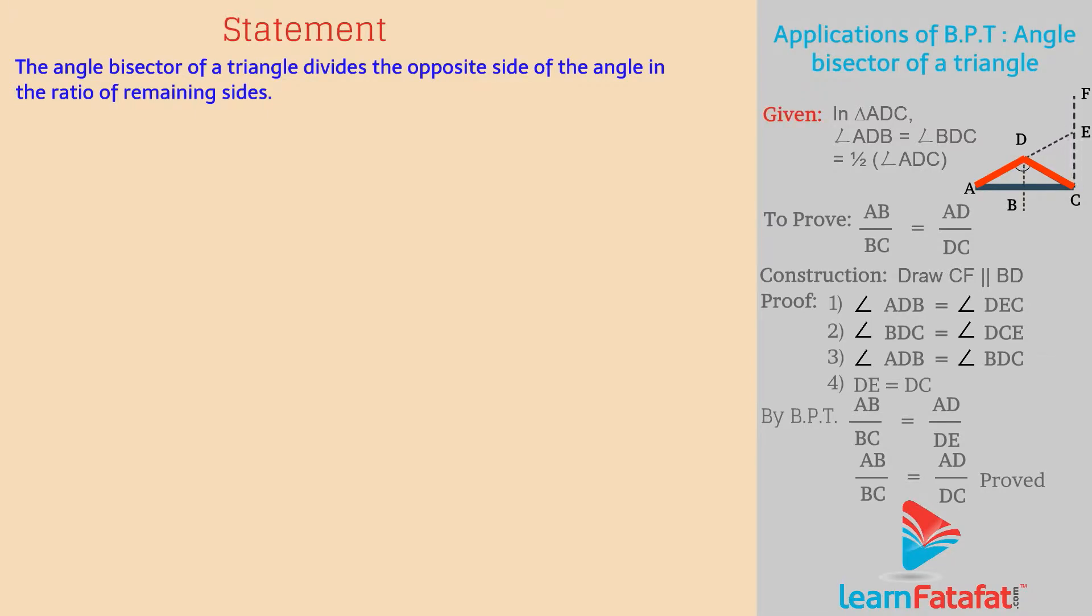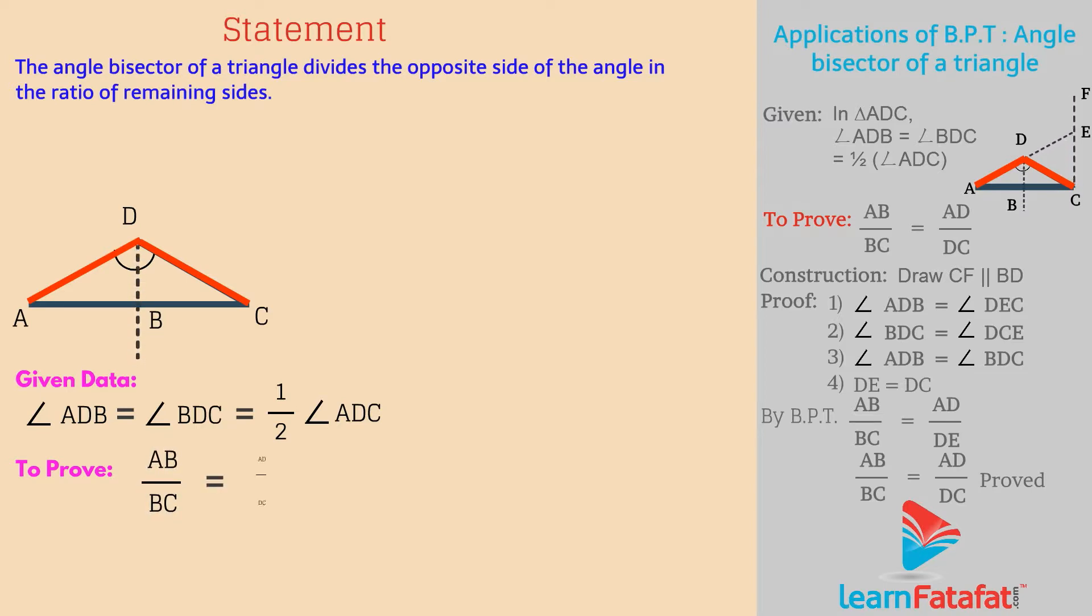Given: Consider triangle ADC. In this triangle, ray BD bisects angle ADC. That is, angle ADB is equal to angle BDC, which is equal to half of angle ADC. To prove: We have to prove that AB divided by BC is equal to AD divided by DC.